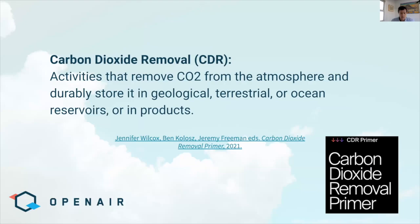That said, every credible climate forecast — including in very stark terms the most recent IPCC assessment report — indicates that carbon removal will be required at gigaton scale by mid-century. That's billions of tons per year to counteract those emissions that are difficult or inequitable to abate, and ultimately we'll need to start removing the tremendous excess trillions of tons of anthropogenic CO2 already in the atmosphere. If you're new to CDR, our previous This is CDR sessions — this is now our 23rd — are a great resource.